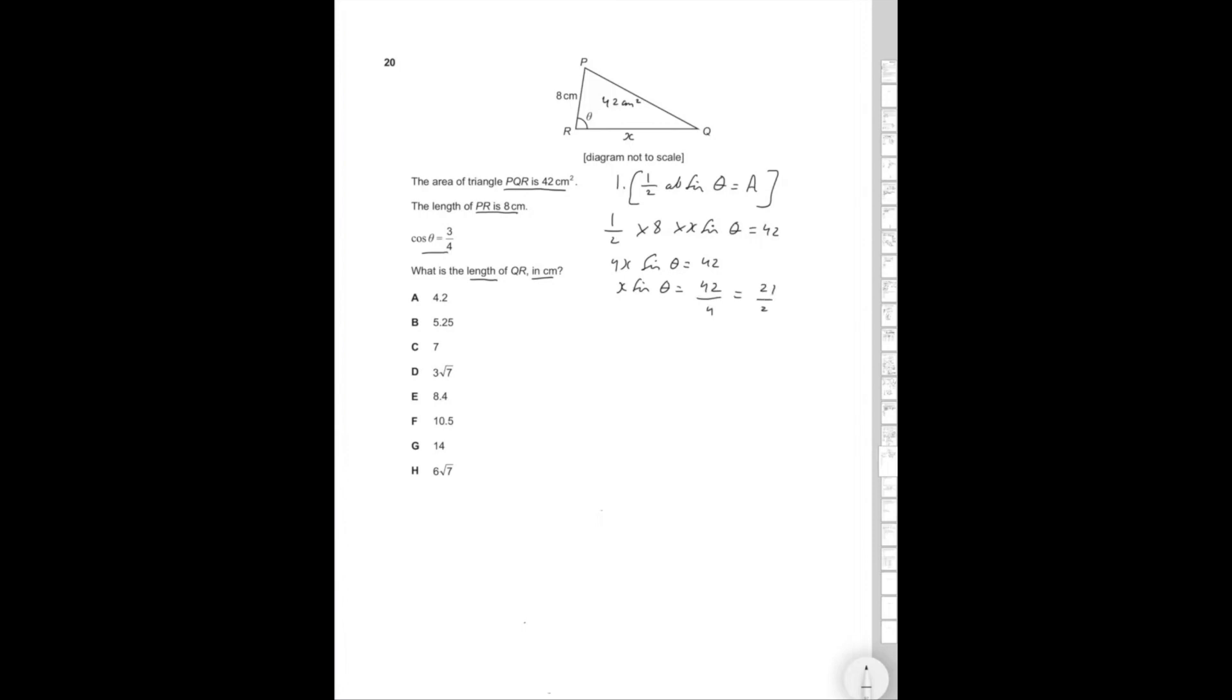Now, how do you find sine theta? So that's going to be step two. So we have cos theta, so let's draw a right angle triangle. Call this angle theta. So remember, Sohcahtoa. Cah is adjacent over hypotenuse. So if cos theta is 3 over 4, this is 3, this is 4.